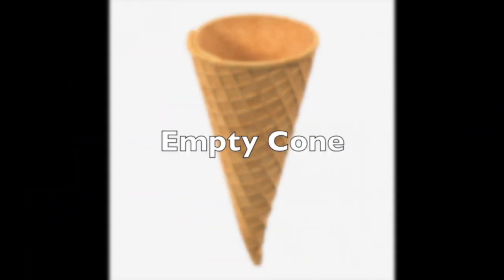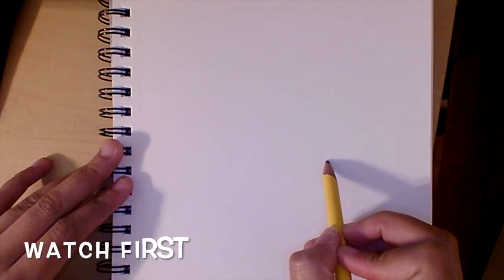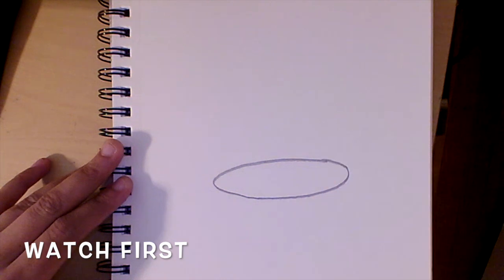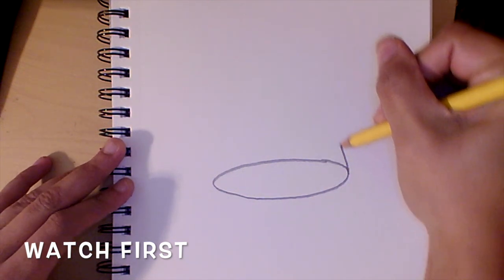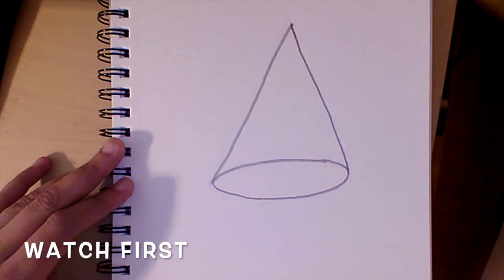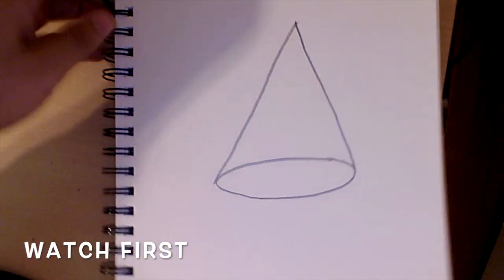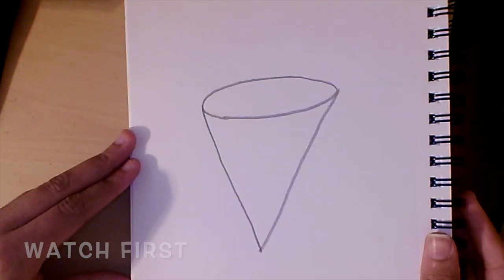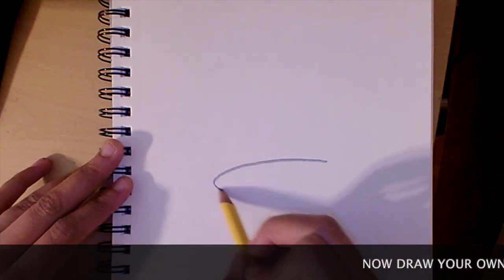Empty cone. To draw an empty cone, make a circle shape at the bottom, and then connect the ends up with an angle line. Now, draw your own empty cone.